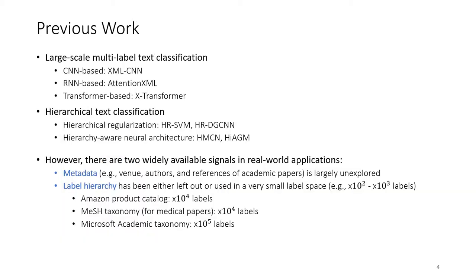Our task is related to two lines of previous studies. The first line is large-scale multi-label text classification, which has lots of previous studies utilizing various architectures like convolutional neural networks, recurrent neural networks, and transformers. The second line is hierarchical text classification, which takes a label hierarchy as input and uses techniques like hierarchical regularization or hierarchy-aware neural architecture.